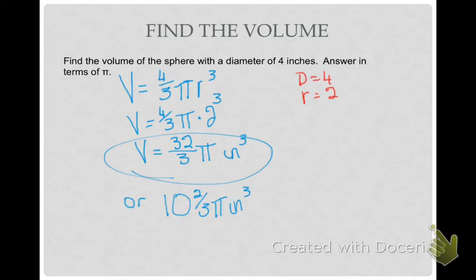Or, you could change it to a mixed number, 10 and 2 thirds pi inches cubed. You just have to look carefully at what Math Excel is asking you.